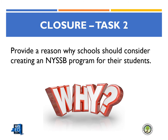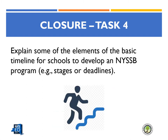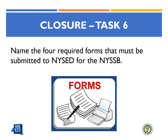Task 2: provide a reason why schools should consider creating a Seal of Biliteracy program for their students. Please stop the recording now. Task 3: list the criteria that a student could meet to earn the Seal of Biliteracy at your school. Please stop the recording now. Task 4: explain some of the elements of the basic timeline for schools to develop a seal program, such as the stages or deadlines. Please stop the recording now. Task 5: give an example of a potential culminating project for world languages or English based on criteria 1E or 2E. Please stop the recording now. Task 6: name the four required forms that must be submitted to OBEWL for the seal. Please stop the recording now.